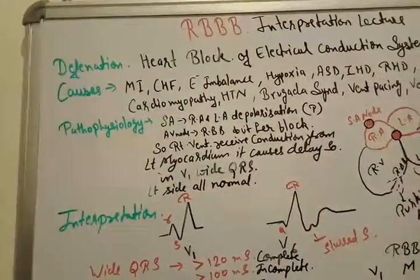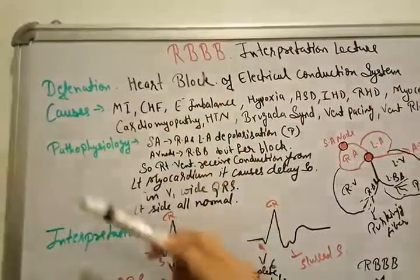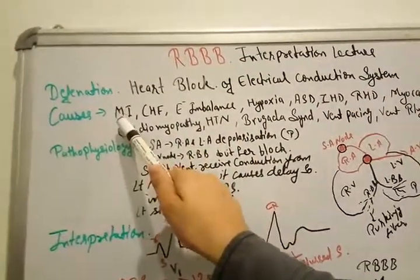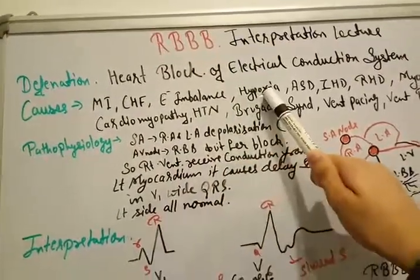What kind of causes lead to right bundle branch block? Myocardial infarction, congestive heart failure, electrolyte imbalance, hypoxia,